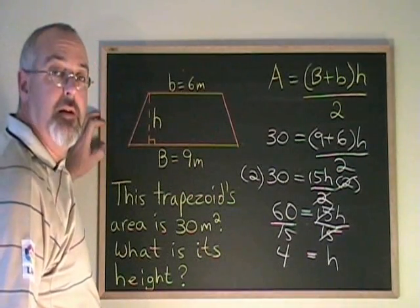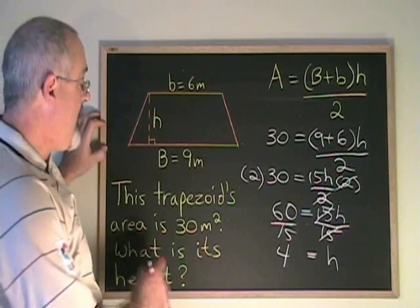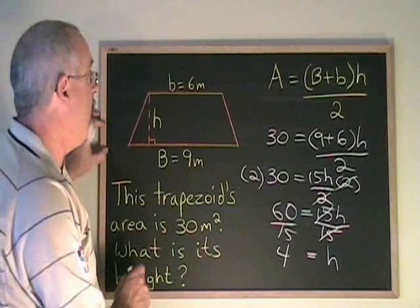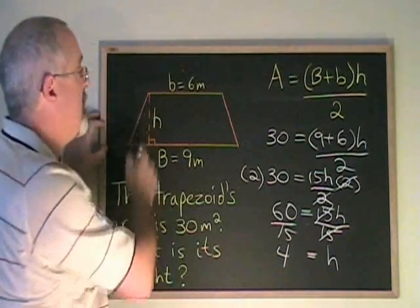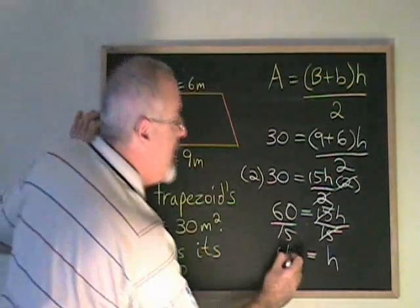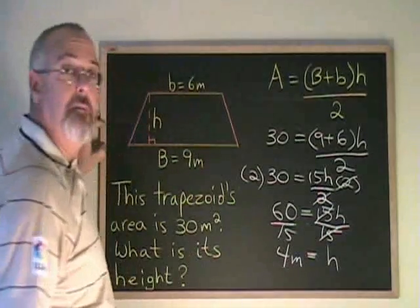And all I'm missing is my unit of measure. Since the area was given in meters squared, and the side lengths were given in meters, that means this height, which is also a side length, is going to be 4 meters in length.